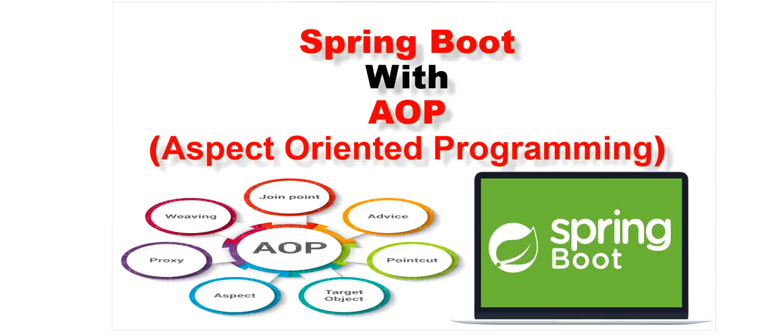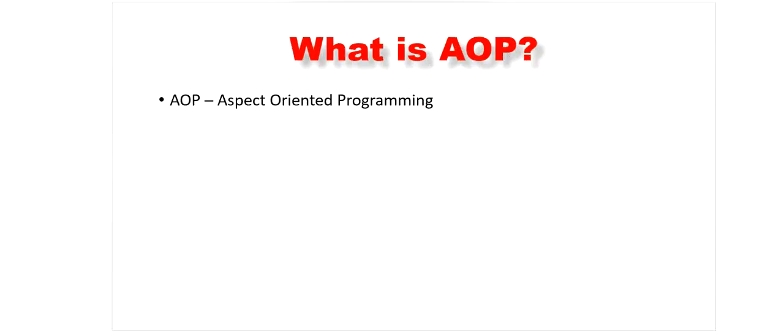Hello, welcome to this channel 'Gain Java Knowledge'. Today in this video we are going to learn what is AOP, why we need AOP, and how to implement AOP in a Spring Boot project. AOP is Aspect Oriented Programming - a paradigm to increase modularity by allowing the separation of cross-cutting concerns. These cross-cutting concerns are different from the main business logic, and we can add additional behavior to existing code without modification of the code itself.